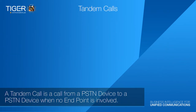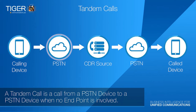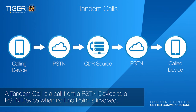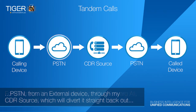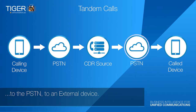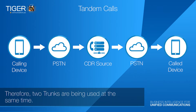A tandem call is a call from a PSTN device to a PSTN device when no endpoint is involved. For example, if you put your handset on call forward all, a call will come in from the PSTN from an external device, through your CDR source, which will divert it straight back out to the PSTN to an external device. Therefore, two trunks are being used at the same time.